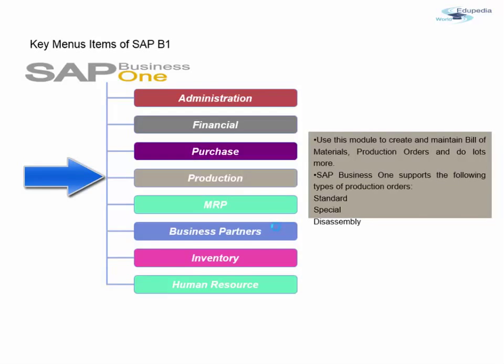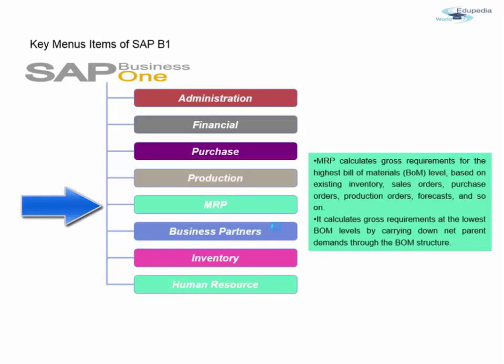The Production module allows you to create and maintain bills of materials (BOM), production orders, and much more. SAP Business One supports the following types of production orders: Standard, Special, and Disassembly.